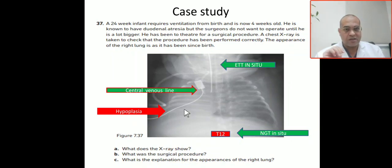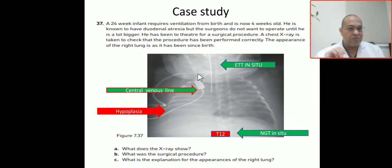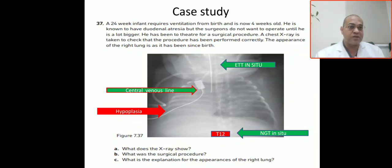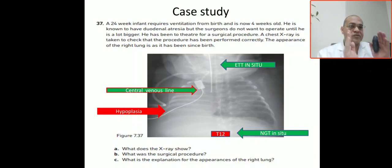There is another line here — this is the line for the surgical procedure done for this baby. You can see it here: this is a central venous line. It comes from up and goes upward through the superior vena cava until it reaches the right atrium. This line represents the surgical procedure performed — insertion of a central venous line.